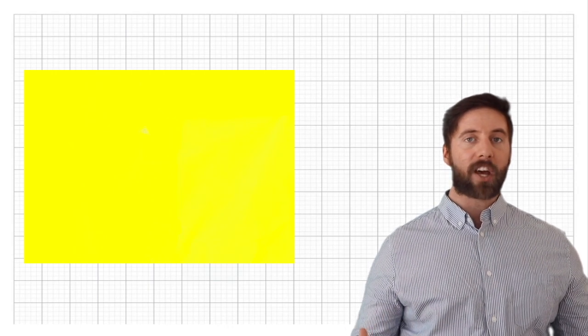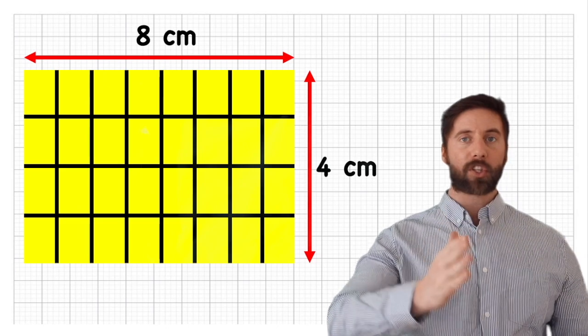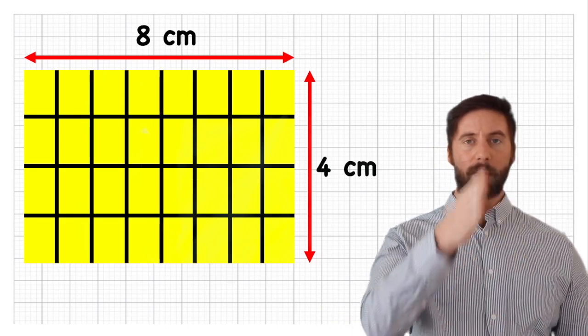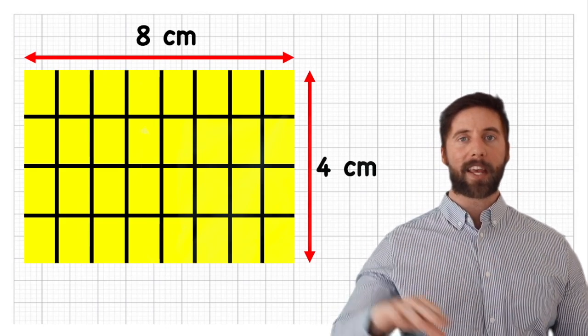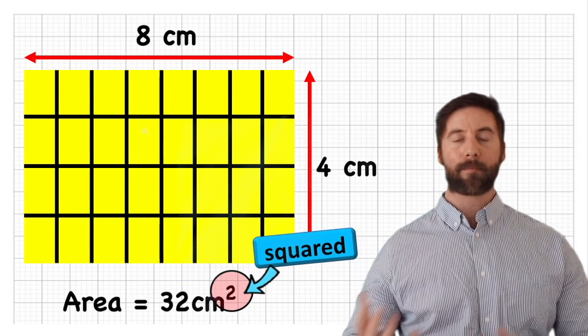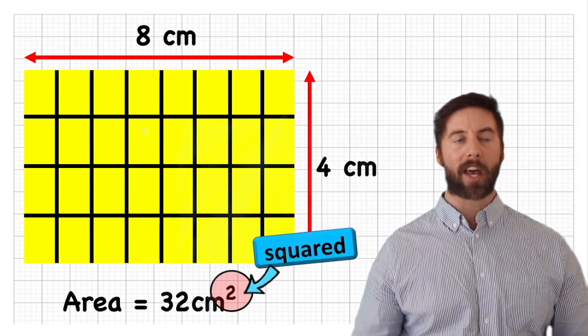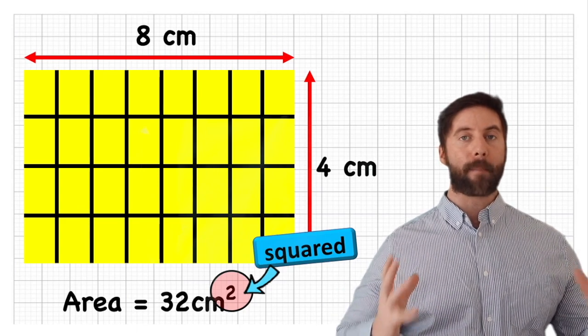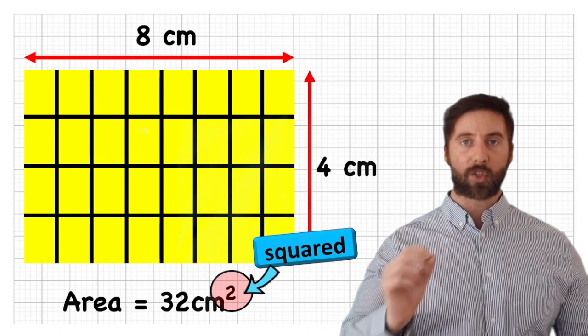The perimeter is the white line that we can measure all the way around and the area is how much grass we are going to need. The grass is over the surface, it is the surface area. And we measure area by cutting it up into squares. So we cut the length and we cut the width into squares. Therefore our measurement is recorded in squares: metre squared, centimetre squared, any kind of measurement but we are measuring it and recording it with squares.